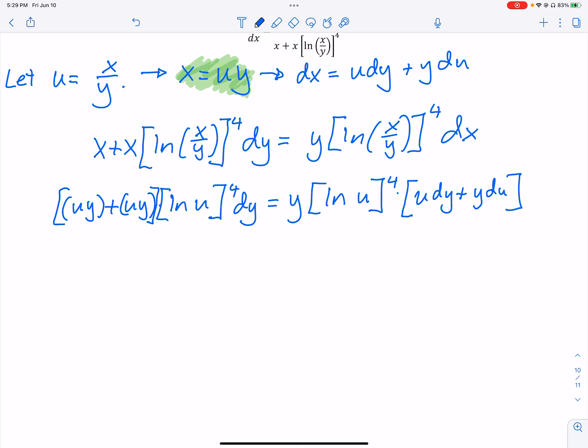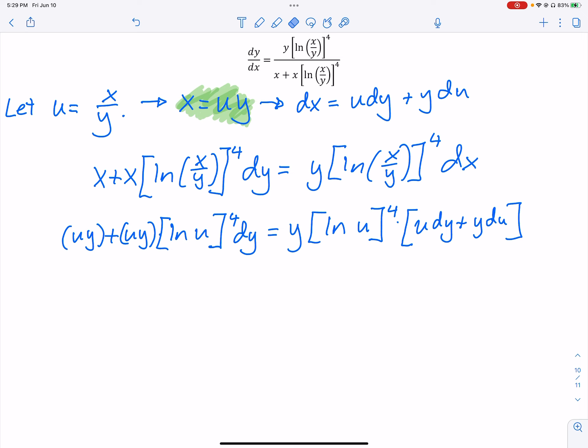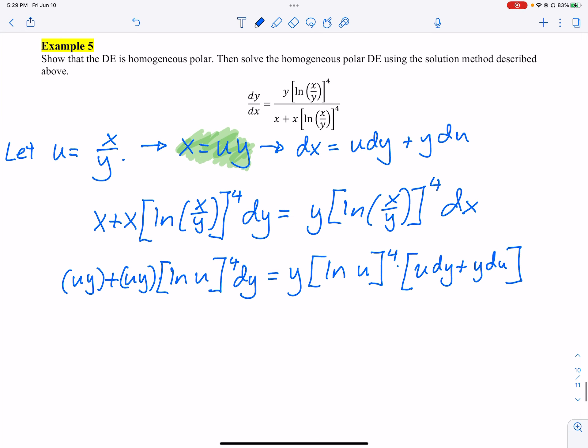And then now I replace this dx with u dy plus y du. Let's multiply everything out. This, I know it feels weird. We actually should probably write it like this. I can take a u y out of that. We notice ln of u to the fourth is on both sides. Let's take that out of our equations. So I'm going to rewrite. I got u y, but we can't divide.